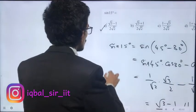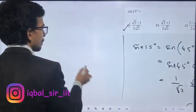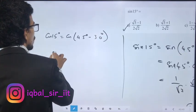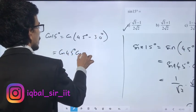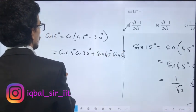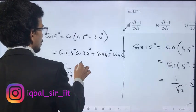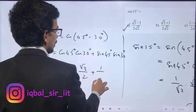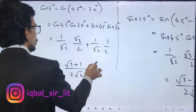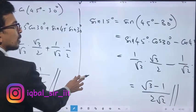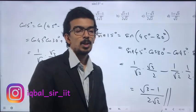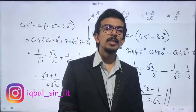Now cos 15 degrees. We write cos 15 as cos(45 minus 30). Expanding: cos 45 cos 30 + sin 45 sin 30 = (1/√2)(√3/2) + (1/√2)(1/2). This becomes (√3 + 1) / (2√2). These are standard angle values. We will continue in the next class.